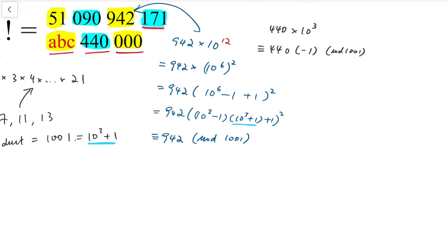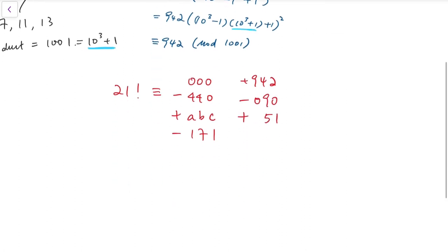So all together, if I want to do mod 1001 on the whole number, then it will be congruent to 21 factorial congruent to, first we have 000 minus 440, and then plus a, b, c, minus 171, and plus 942, minus 090, plus 51. And it is congruent to that mod 1001.